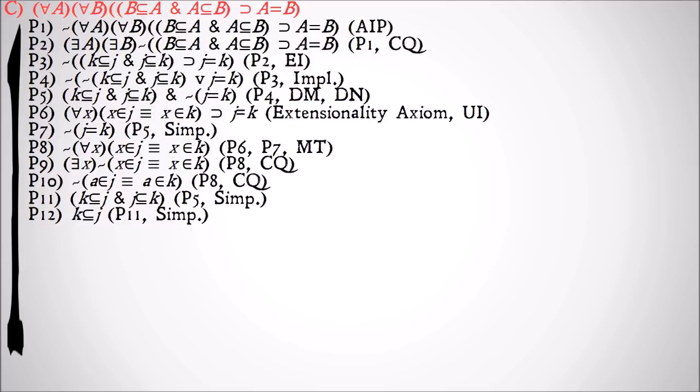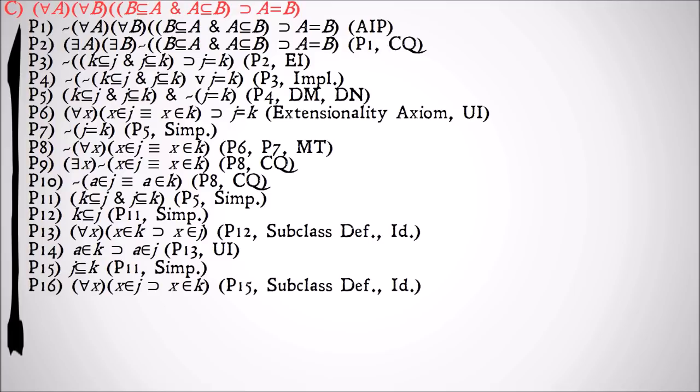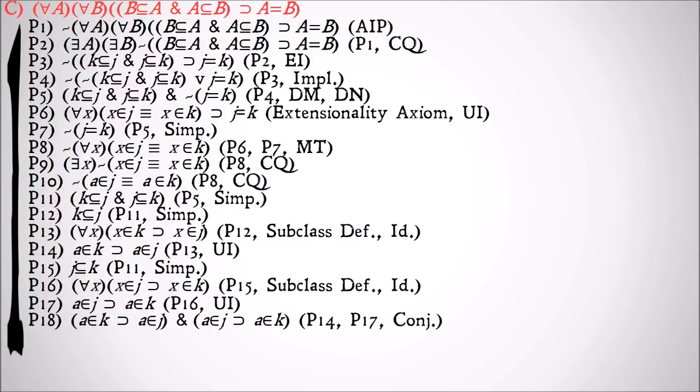Simplify again from premise 11, we get K is a subclass of J. By our subclass definition, that means for all X, X is a member of K implies that X is a member of J. We'll universally instantiate that X to an A because that's what we were working with before. That'll show that A is a member of K implies that A is a member of J. We'll do this again on the other side to get that A is a member of J implies that A is a member of K.